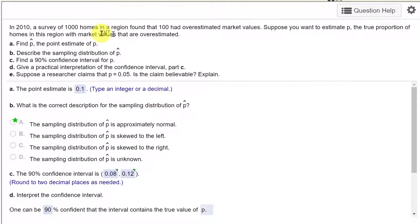In this problem we're given that we had a survey of a thousand homes and found that 100 had overestimated market values. You want to estimate P, the true proportion of the population with this information.